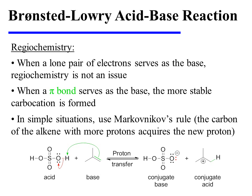When a lone pair of electrons serves as the base, regiochemistry, or the location of protonation, is not an issue. When a pi bond serves as the base, in theory, the proton could be added to either of the two atoms involved in that double bond. In simple situations, Markovnikov's rule is a useful mnemonic to arrive at the more stable ion. Markovnikov's rule tells us that the carbon of the alkene with more protons will acquire the new proton.